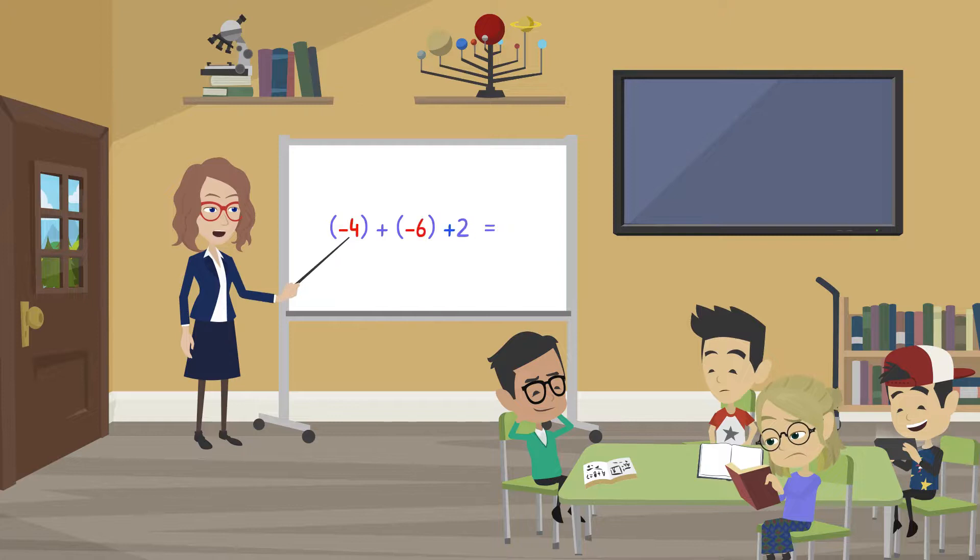Now you'll want to combine your like signs. Negative 4 plus negative 6 is negative 10. And finally solve the problem. Negative 10 plus 2 equals negative 8.